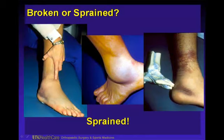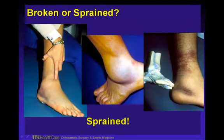No breaks — all severe ankle sprains. The ecchymosis can occur very quickly. Sometimes if we put an air cast on, that may change the way the ecchymosis and swelling pattern appears. The one in the middle is diffusely swollen with a lot of subcutaneous swelling, but again these are severe anterior talofibular ligament sprains with no fractures.